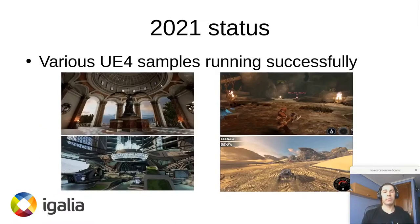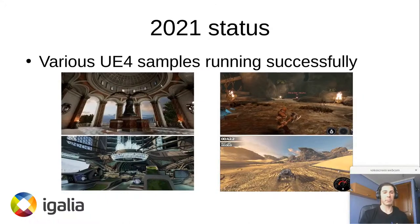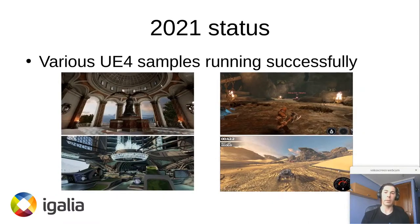I mentioned before that one of our issues last year was the lack of real-world testing. In that regard, we also made some improvements. We were lucky enough to get our hands on some Unreal Engine 4 sample binaries compiled for the Raspberry Pi 4. While these are still just small demos, they were useful in testing our driver with more modern workloads. We are happy to report that these are working fine, and they were also very useful to drive our performance optimization efforts.